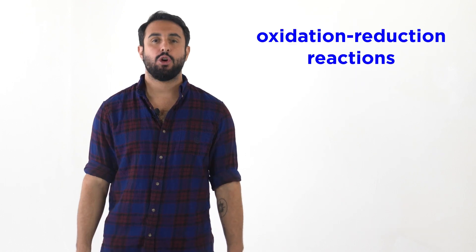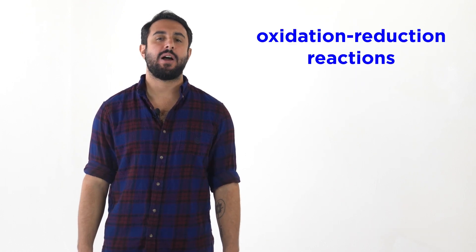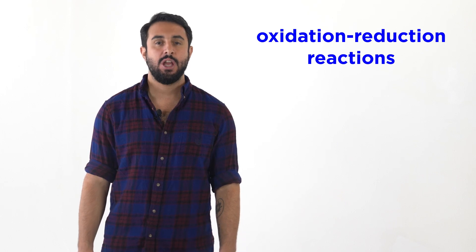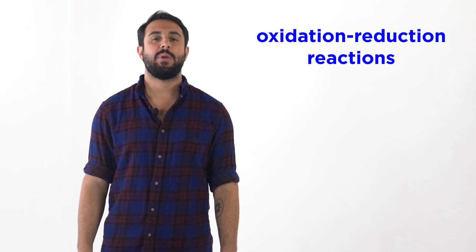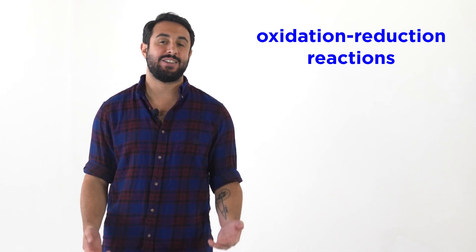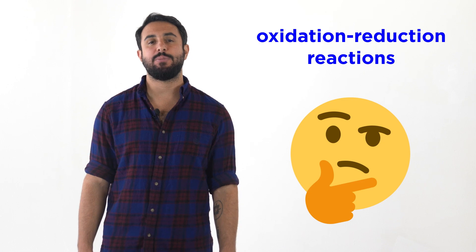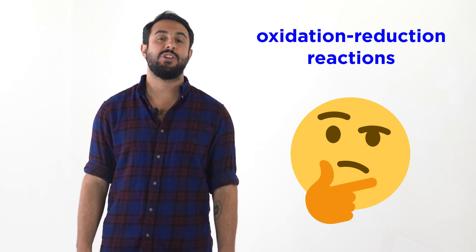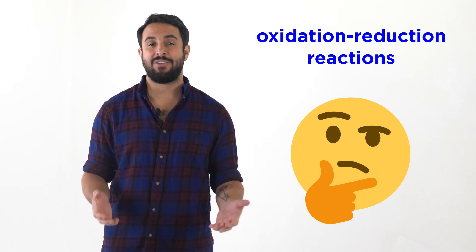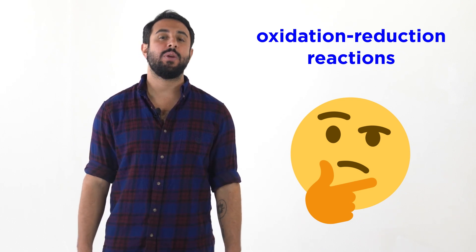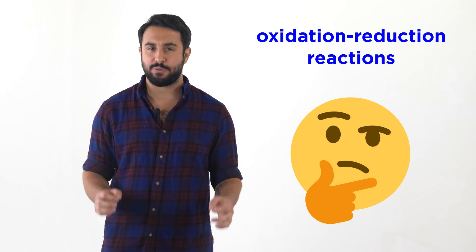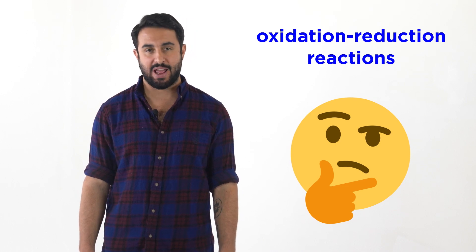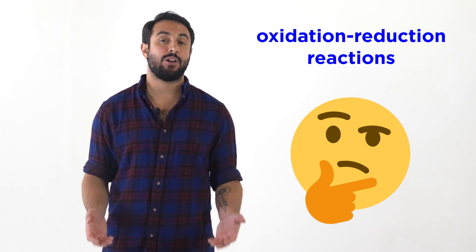Professor Dave and Chegg here. Earlier we learned about oxidation reduction reactions, or redox reactions. We defined some terminology and we learned about oxidation numbers, but now it is time to do something a bit more complicated with redox reactions. We have to know how to balance these reactions, and doing so will be much more involved than balancing more typical chemical reactions. Let's learn this algorithm now.